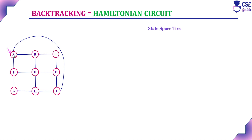To find the solution for the Hamiltonian circuit, we need to construct the state space tree. The state space tree will start with the initial solution, where the initial vertex is nothing but A.